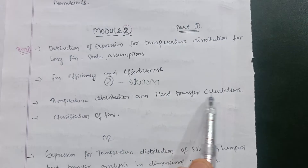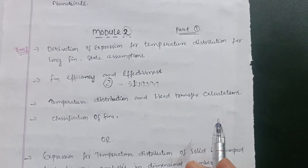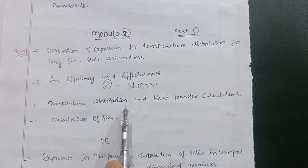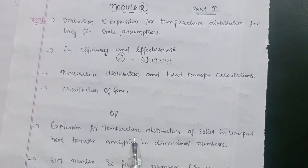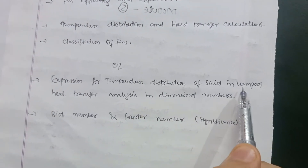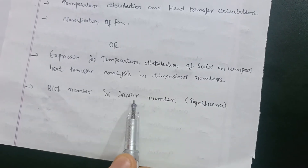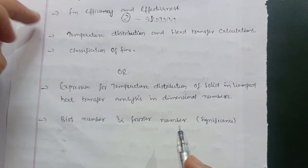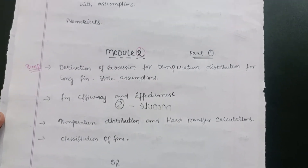Study temperature distribution and heat transfer calculations using heat transfer methods and solve numericals on that basis. Then classification of fins is also in Module 2. In Part 2, they may ask for the expression for temperature distribution in lumped heat transfer analysis, dimensionless numbers, and the significance of the Biot number and Fourier number. Go for whichever part is convenient, but the first part of Module 2 is more convenient. You can definitely score at least 10 marks in Module 2.